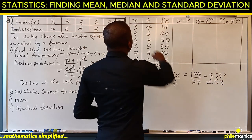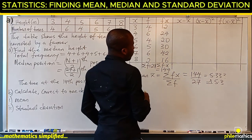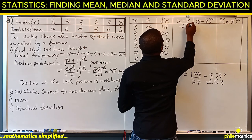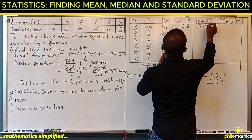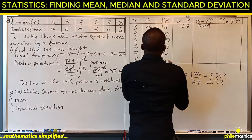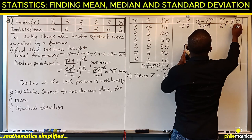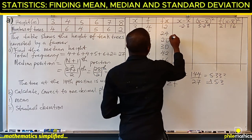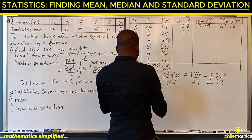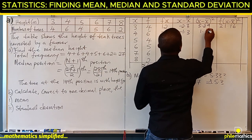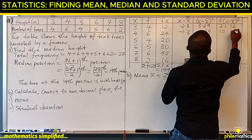Subtracting the mean from each x: three minus 5.3 is minus 2.3; squaring gives 5.29, times frequency 4 gives 21.16. Four minus 5.3 is minus 1.3; squaring gives 1.69, times frequency 6 gives 10.14.